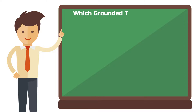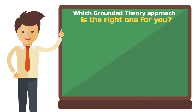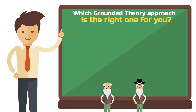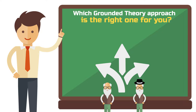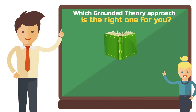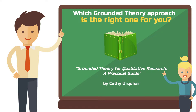Now which grounded theory approach is the right one for you? If you would ask me, I must unfortunately say neither of them. Glaser and Strauss are the pioneers of grounded theory and any further development of the method is based on their ideas. However, there are much better resources available today to learn grounded theory from scratch or to understand it for the first time. I would start with some secondary literature. The best methods book on grounded theory that I know is Grounded Theory for Qualitative Research: A Practical Guide by Kathy Urquhart. This book is perfect for getting started.